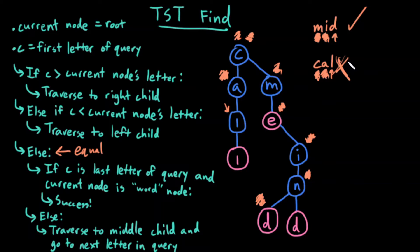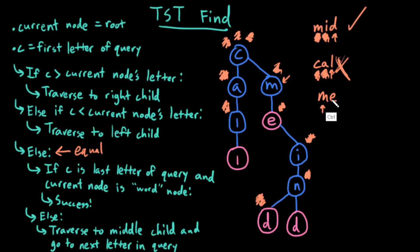Let's do one more example. Let's try the word 'me'. I start at the root, I start at the first letter in my query. My current letter is greater than the current node's letter, so I traverse right — that's all I do.